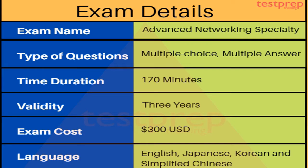Exam details: in the AWS Advanced Networking Specialty exam, there will be multiple-choice or multiple-answer type questions. To complete the exam, candidates will only have 170 minutes. This exam will cost 300 US dollars and can be taken in English, Japanese, Korean, and Simplified Chinese languages.